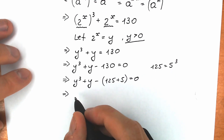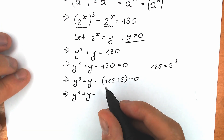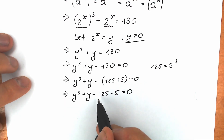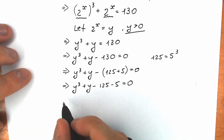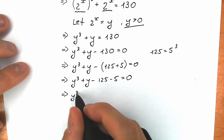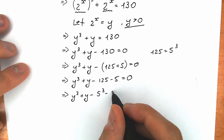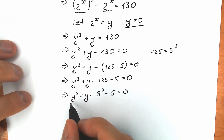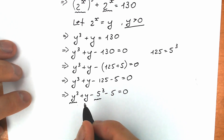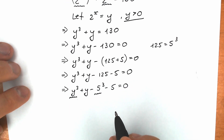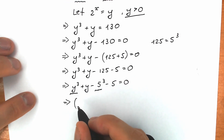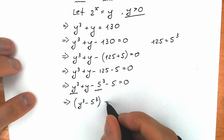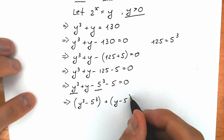Let's group our cubes together and our first-power terms together. In the first parenthesis we have y cubed minus 5 cubed, and in the second parenthesis we have plus y minus 5, all equal to 0.